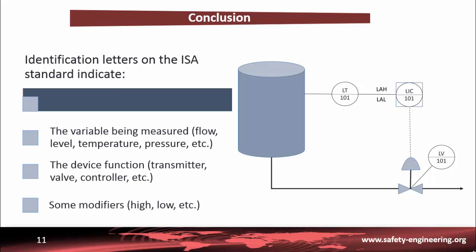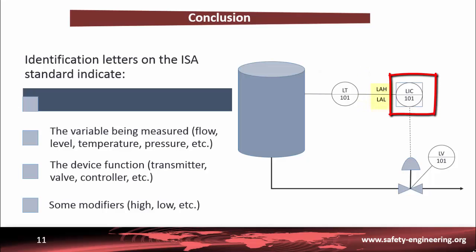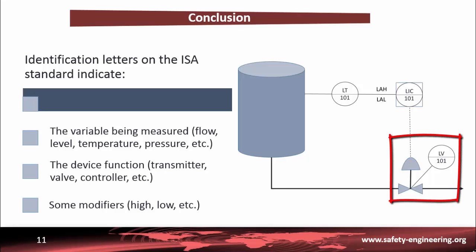The example shown at the beginning of this part can be analyzed in more detail. The first letter for all devices is L, so this control loop refers to level. A level sensor is connected to the tank. A transmitter converts the raw signal at the output of the sensor to a normalized electrical signal — a 4 to 20 mA current loop. This standard signal is sent to a controller. Two alarms warn the operator if the level is too high (LAH) or too low (LAL). A controller with an indicator produces an output signal as a function of measurements and set points. This control signal is sent to the valve to adjust the flow rate and maintain a constant level equal to the desired value.